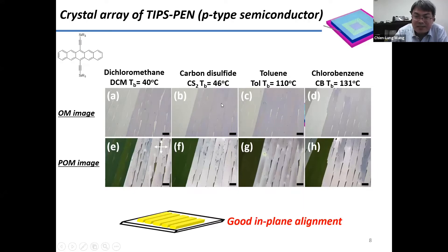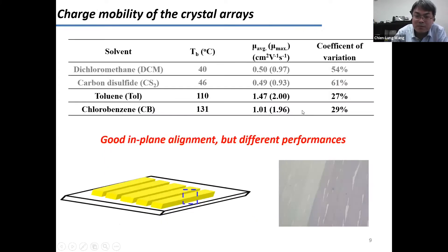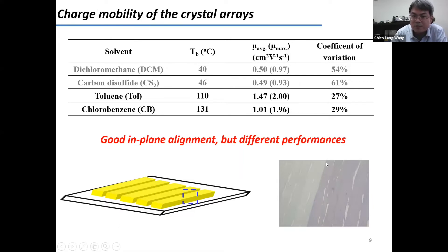A very interesting phenomenon was observed: although under POM the morphology looks very similar, if you look at the performance, crystal arrays grown from high-boiling-point solvents give higher performance with lower standard deviation. But crystal arrays grown from low-boiling-point solvents have lower performance. This suggests there could be some defects along the charge transport channel, and we really wanted to know what they are.